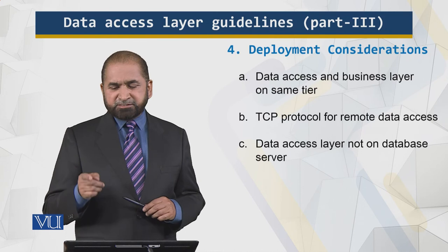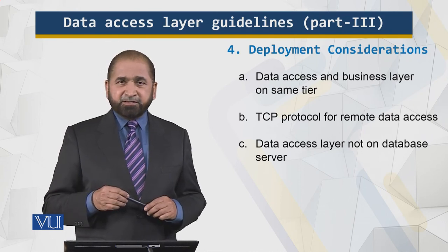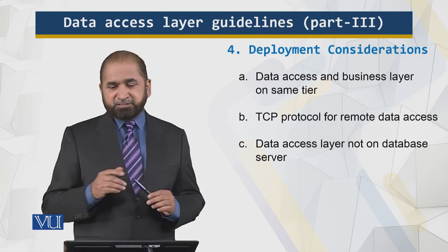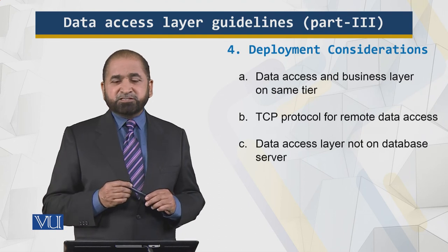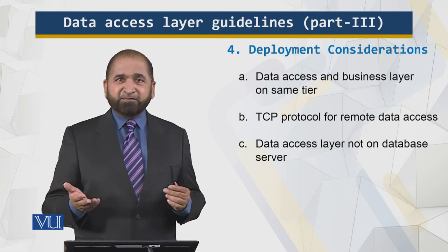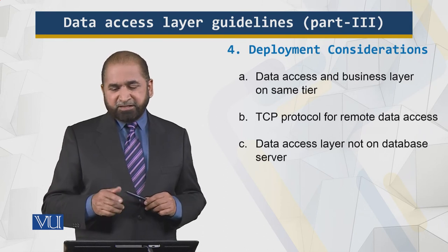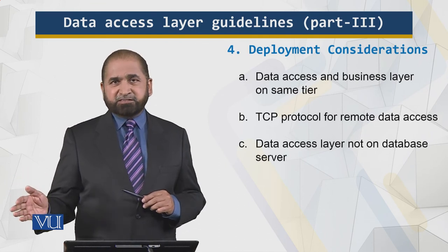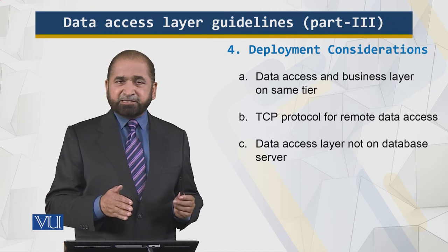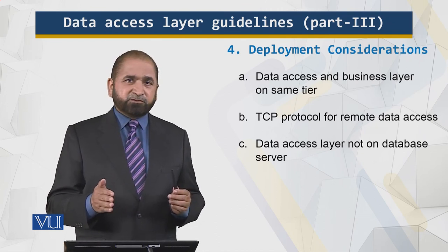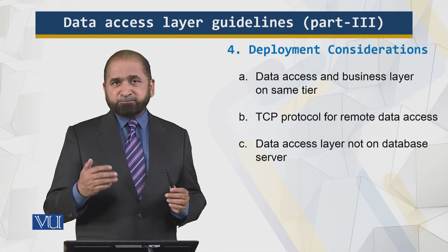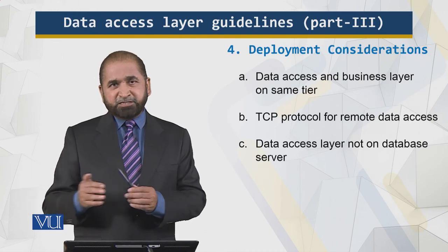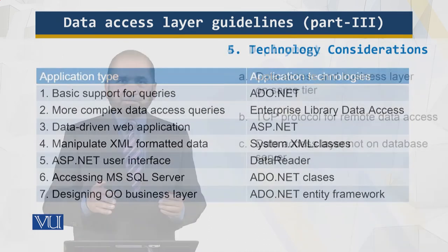For deployment considerations: keep the data access and business layer on the same tier, as this reduces traffic across tiers. For remote data access, use the TCP protocol — the Transmission Control Protocol. The data access layer should not be on the database server itself; the database server is on the last tier, and the data access layer should be separate, because this not only affects performance but also keeps the deployment separated from the bridge between the application layer and the database server.